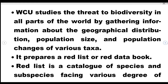All over the world, whatever information is available about taxa is collected and interpreted, and from that it is identified which species are facing the risk of extinction. So it prepares a Red List or Red Data Book. The Red List or Red Data Book is a book which contains information about all species and subspecies which are facing various degrees of risk of extinction.